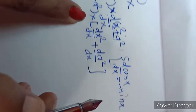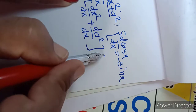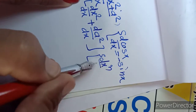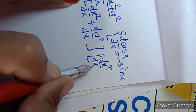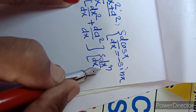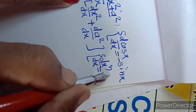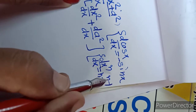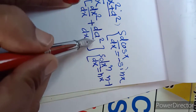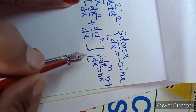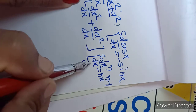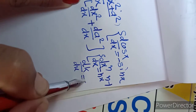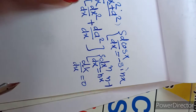If we have x raised to a number, we use the formula for derivative of x raise to n, which is n into x raise to n minus 1. And for a², that is a constant term — the derivative of a constant is always 0.